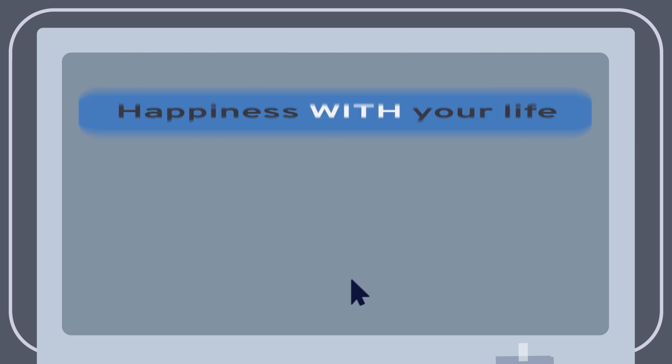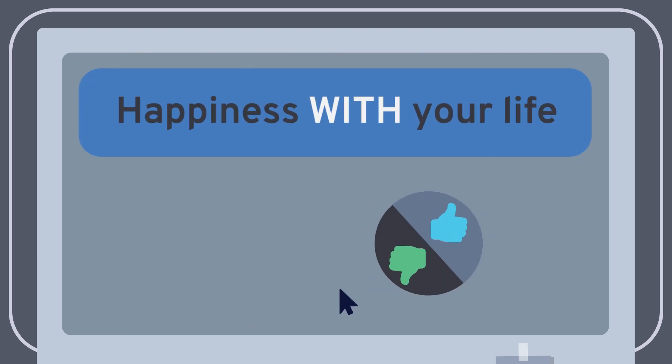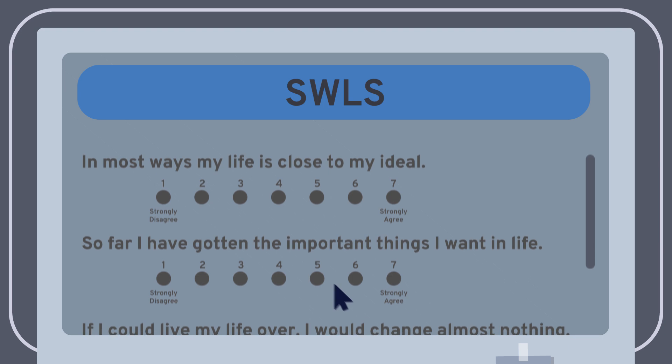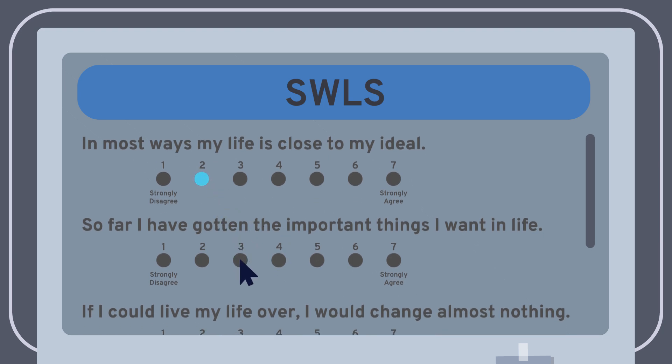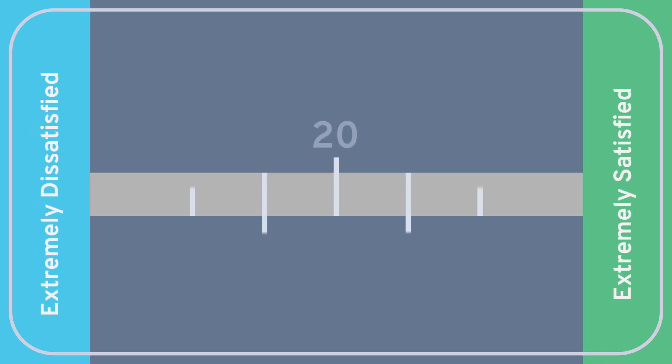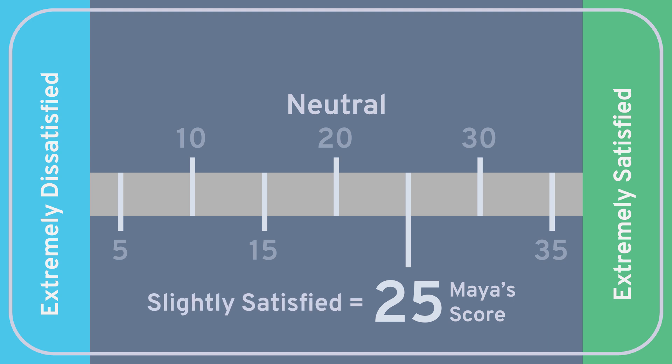To measure how happy she was with her life, Maya then took a survey called the Satisfaction with Life Scale. The questionnaire asked her to indicate how much she agreed or disagreed with a series of five statements about how her life was going so far. For each statement, Maya had to respond with a number between 1 and 7. When she summed up her responses to these five statements, Maya discovered that her total life satisfaction score was 25 out of a possible 35, meaning she's slightly satisfied with her life.